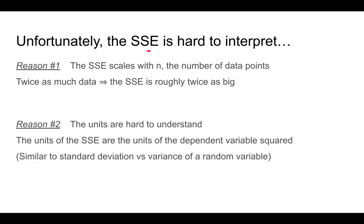Unfortunately, the sum of squared errors is a metric that's hard to interpret for two reasons. The first reason is that it scales with the number of data points. If you double the amount of data, you'll get SSE that's roughly twice as big. The second reason is that the units are hard to understand because the units are basically the square of the dependent variable. It's similar to how when you have a random variable, you can compute the variance, but the units of the variance are the square of the units of the random variable. So people prefer to work with the standard deviation, which is in the same units as the original random variable.